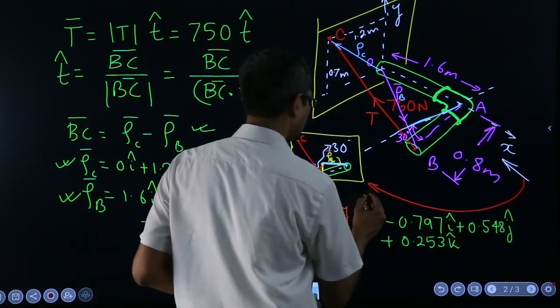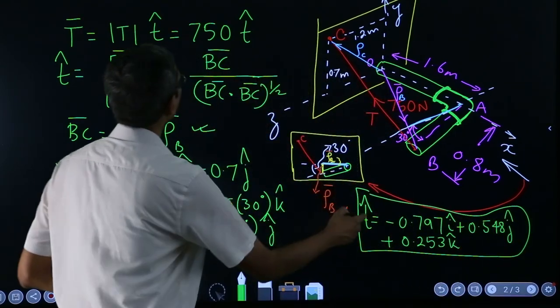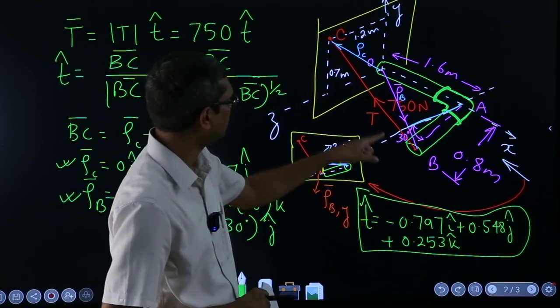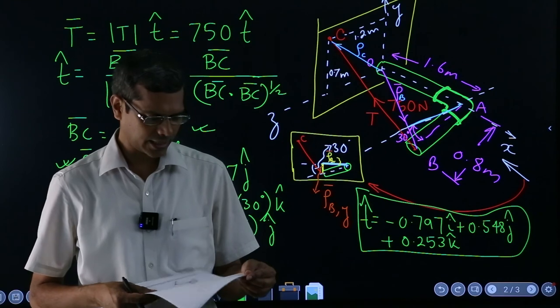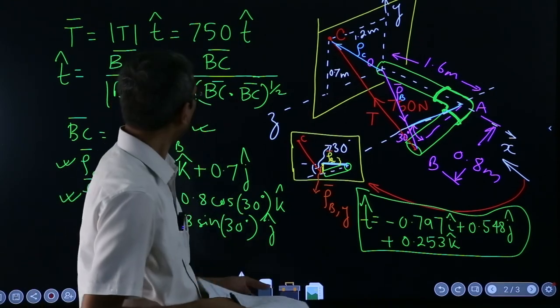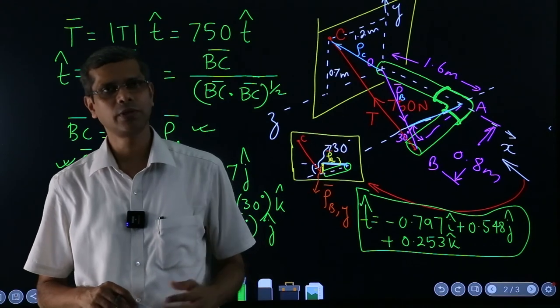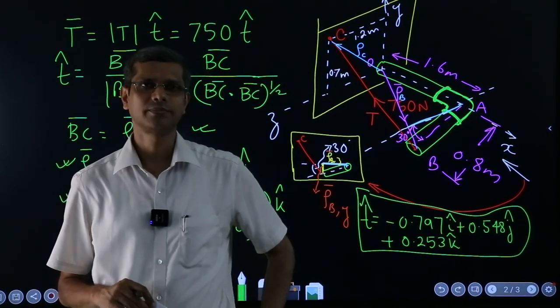This is your vector t-hat, and you just multiply that with 750 to get the vector T that represents the force in this case. See you in another video with another problem solution.